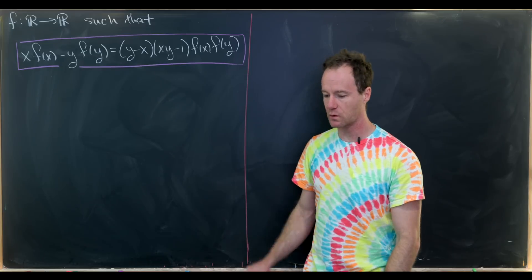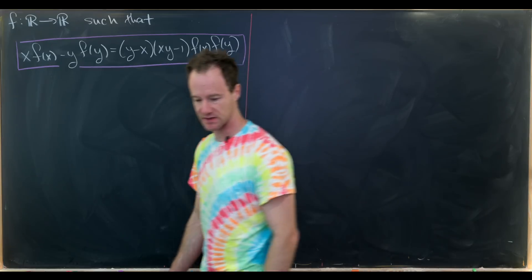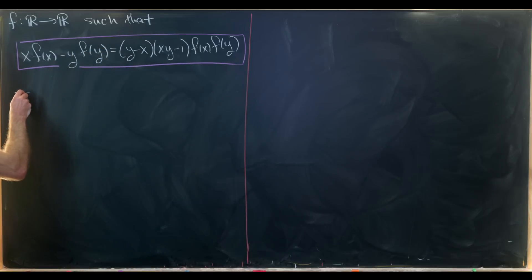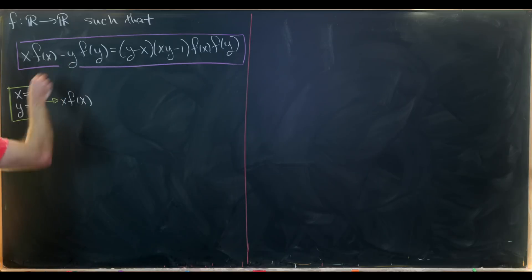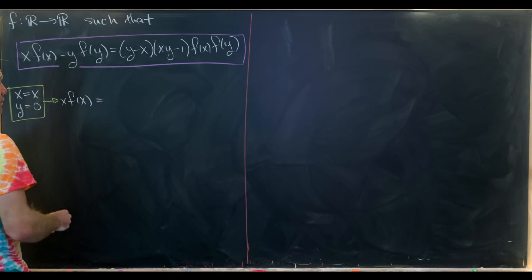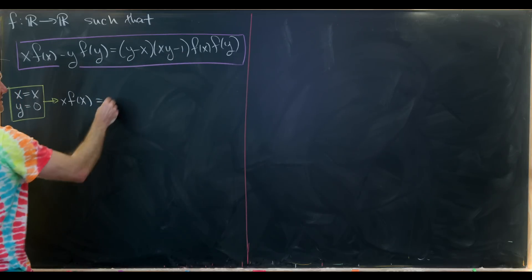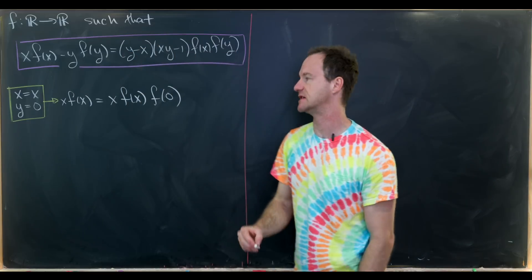Let's start exploring by evaluating this at a free variable and then a number just to see what we get. The classic thing to do would be to set x equal to itself and y equal to 0. That's going to give us xf(x), the y will cancel out, and over here we'll have -x times -1, so that'll just give us xf(x)f(0).